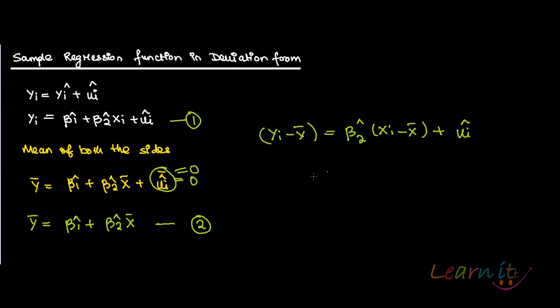But these are deviations from mean, which you can write it as the lowercase letters. yi equals to beta 2 hat - this again is a deviation from mean - plus ui hat. Clear. So this is the population regression function in deviation form. Population regression function in deviation form.